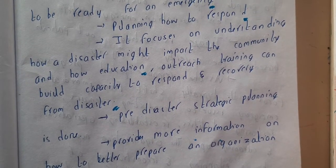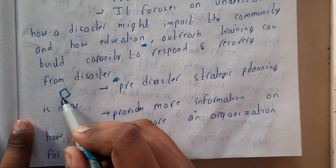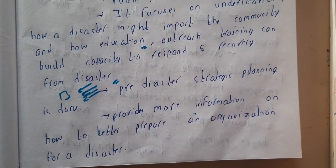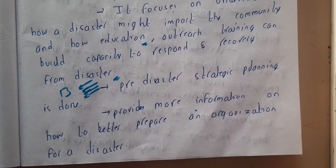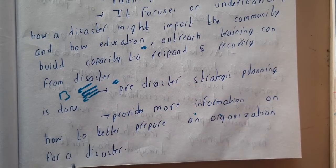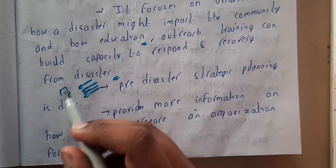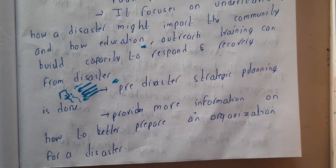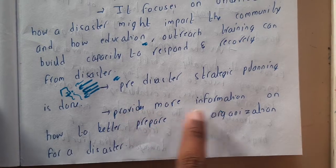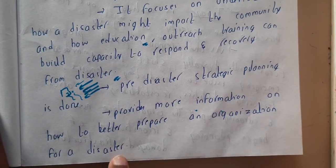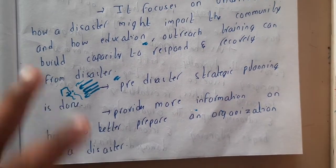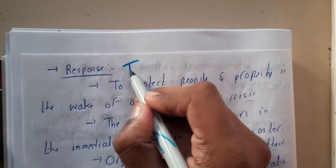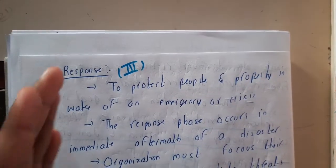Preparedness focuses on understanding how a disaster might impact the community and how education, outreach, and training can build capacity to respond and recover. If there is proper preparation, the response and recovery will be faster and easier. Pre-disaster strategies and planning are done here. For example, if your company is in a low-lying area near a river or coast with high flood risk, you will have emergency exit plans and designated safe locations.